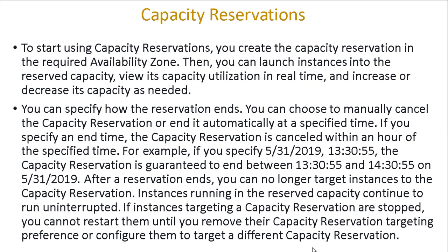You can specify how the reservation ends — either by manually canceling the capacity, or by having it end automatically at a specific time. For example, if you specify a date such as 5/31/2021 and set the time, after that time period expires your instance is automatically terminated. After the reservation ends, you can no longer target instances to capacity reservations. This is a very useful advantage of capacity reservation.